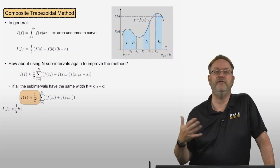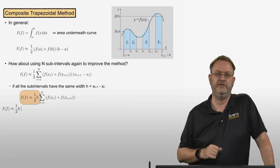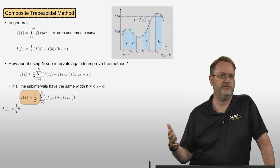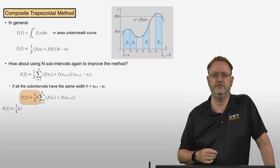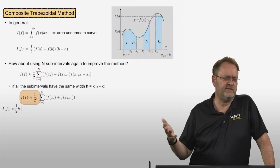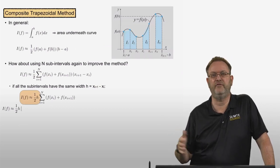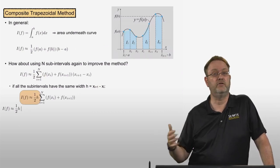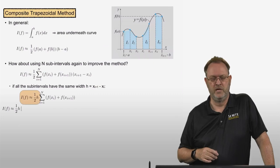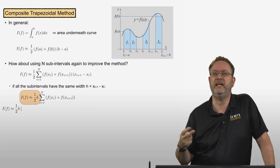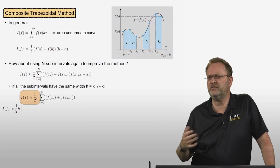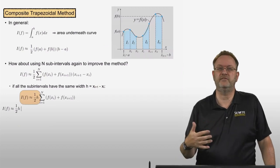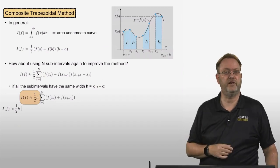It's not always the case that function evaluations are quick and easy. For example, f(x) might require solving a very complex system, taking a very long time to evaluate. In the current formula we need two evaluations per subinterval, but if function evaluation is costly, we'd prefer a formula that minimizes the total number of evaluations.